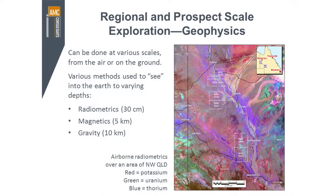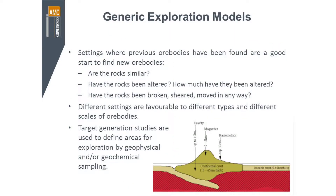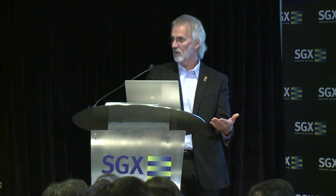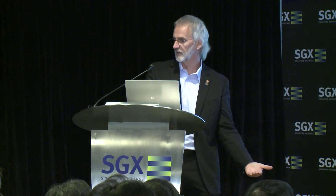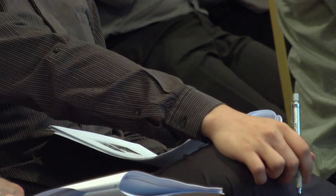An example here is a radiometrics image. Radiometrics is a very particular sensing technology that really only looks at the surface of the earth — if you've got soil, it's only giving you an indication of what's in the soil. You might also have magnetics, which senses the magnetic strength of the rocks and could potentially look down five kilometres into the earth's surface. If you look at the gravity response, another geophysical method, that has the potential of looking down 10 kilometres. All of this information helps you form a picture of what's happening under the ground in your area.